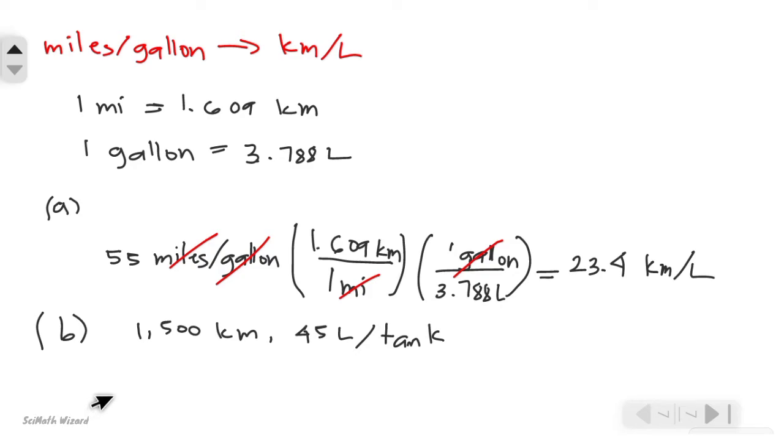1500 kilometers divided by the answer in part A, which is 23.4 kilometers per liter. Dividing it, we can cancel out the unit kilometers and we should get a value of 64.1 liters. We are asked to solve for the tank.